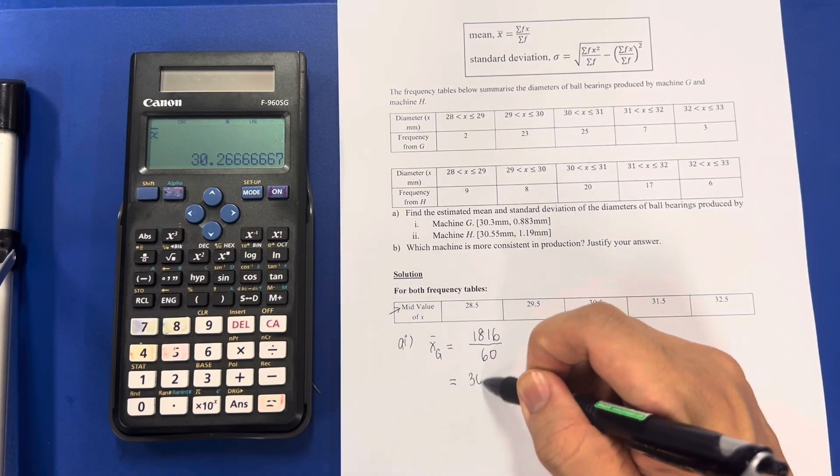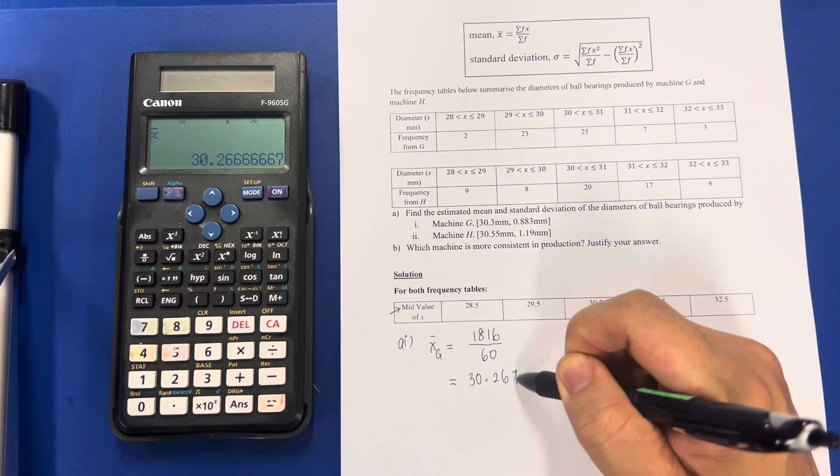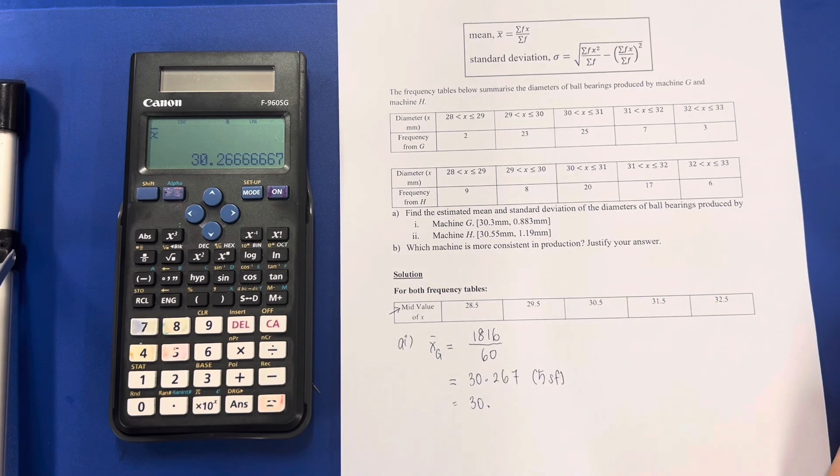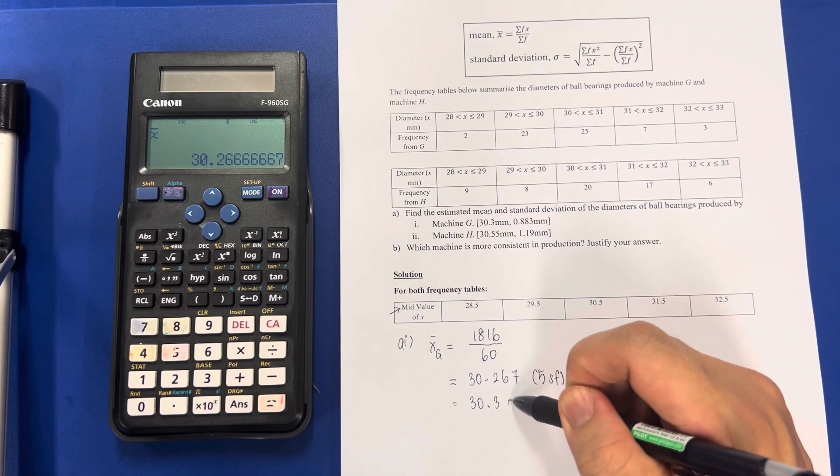Shift 1 again, this time round 4, 2 for the mean: 30.2675. 5 significant figures: 30.3 mm.